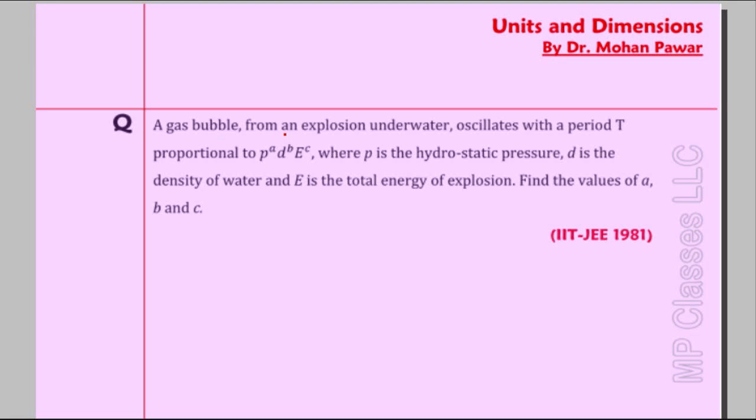A gas bubble from an explosion underwater oscillates with a period T proportional to P to the power A, D to the power B, E to the power C. This is a product of three quantities: pressure, density, and E for energy. Where P is hydrostatic pressure, D is the density of water, and E is the total energy of explosion. Find values of A, B, and C.